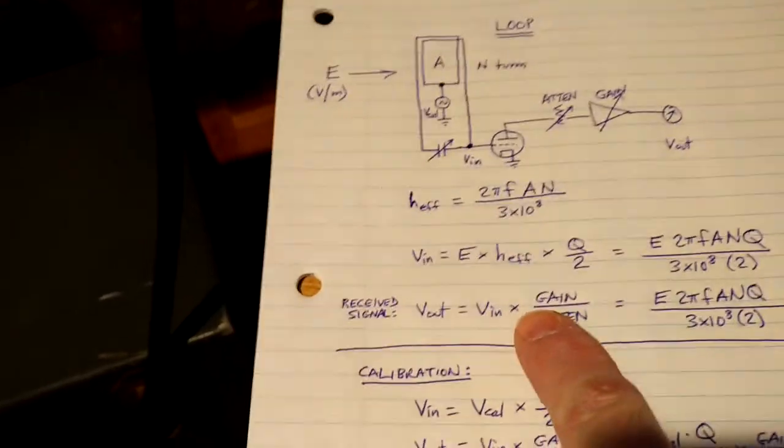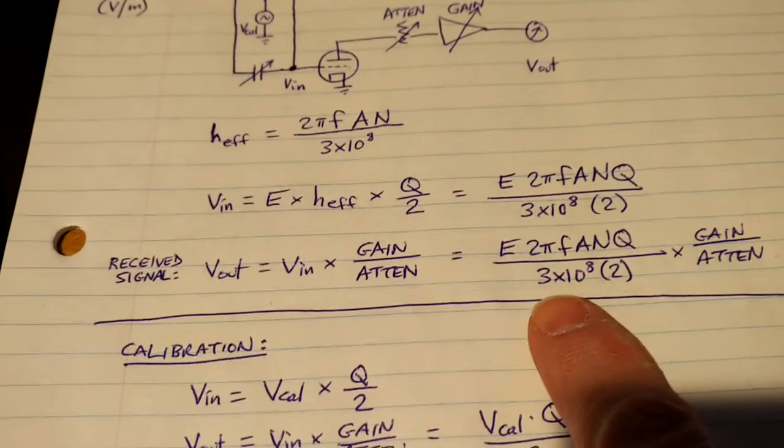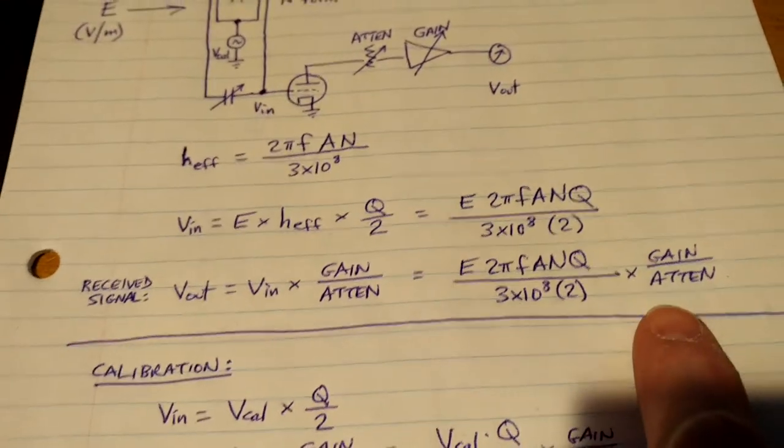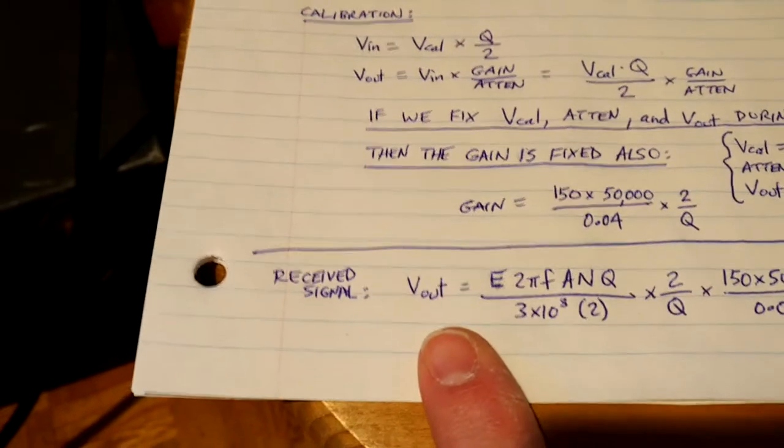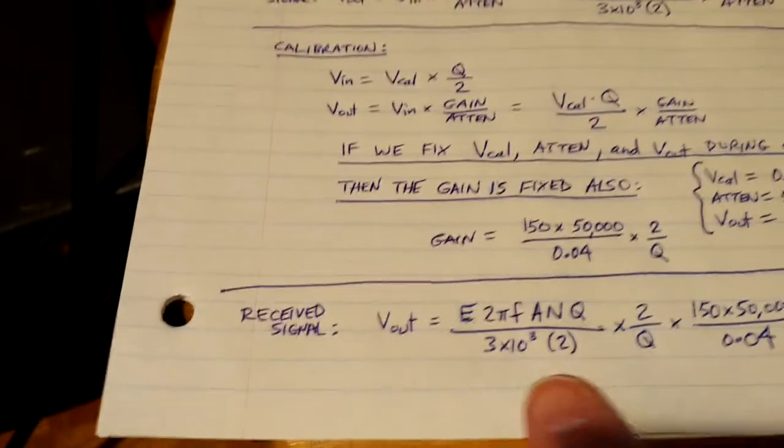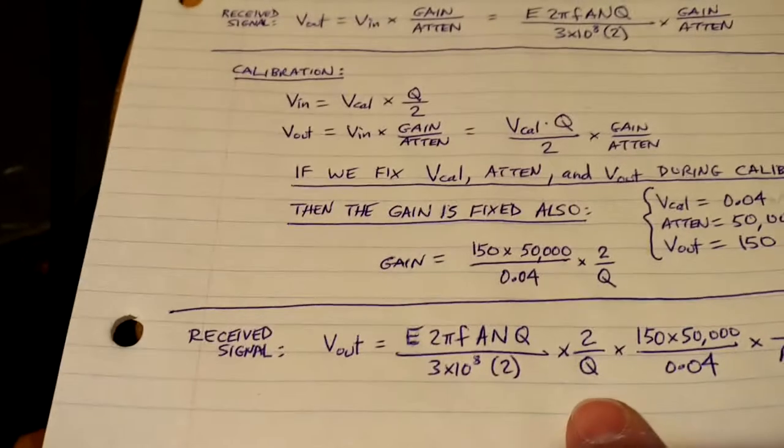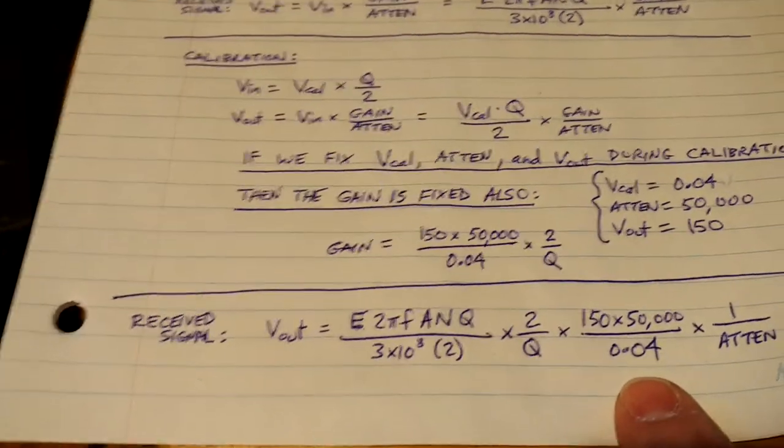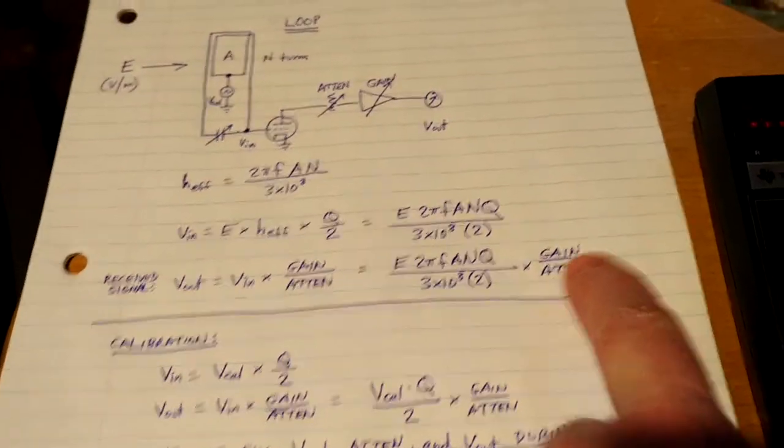So now, the receipt signal, this variable, can be substituted with the calibration factor. So we had here, remember, V out is E 2πFANQ over 3 times 10 to the 8th 2 times gain over the attenuator of the receipt signal that you were measuring to get it on scale. So the receipt signal then, substituting the gain, is E 2πFANQ over 3 times 10 to the 8th 2 times this gain factor, 2 over Q, 150 times 50,000 over 0.04 times 1 over the attenuation. We've just substituted here for the gain.